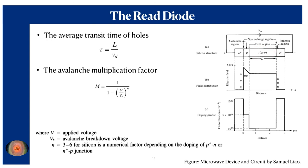The electron-hole pairs are generated at the N+ p-junction because the maximum electric field appears there. The generated holes drift through the intrinsic region, which is therefore called the drift region. The length of this drift region defines the transit time for the holes. With a constant drift velocity V_D, the holes travel this drift region of length L, so the transit time is L divided by V_D. This transit time defines the resonant frequency for the microwave cavity within which this device is mounted. The avalanche multiplication factor is M = 1/(1 - (V/V_B)^n), where n lies between 3 to 6 for silicon.